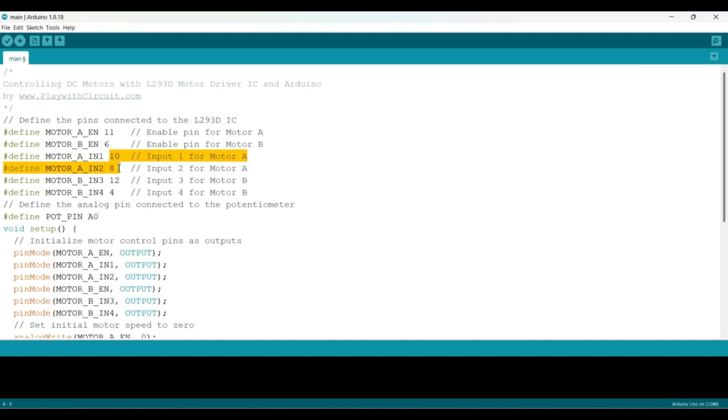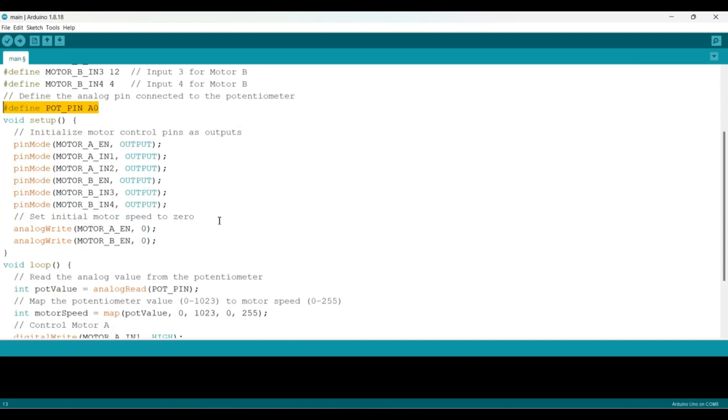IN1 and IN2 are connected to pin 10 and 8. IN3 and IN4 are connected to pin 12 and 4. This is the connection for potentiometer. Middle pin of potentiometer is connected to analog A0 of Arduino.